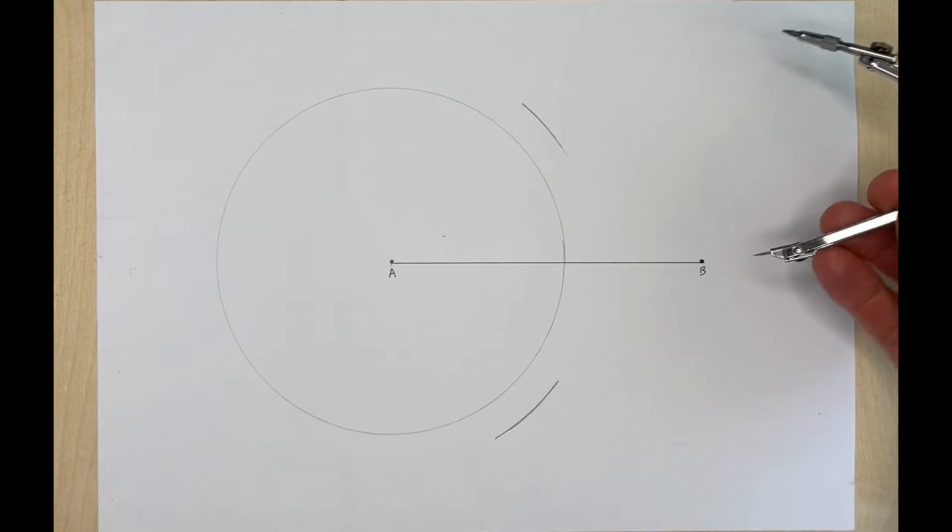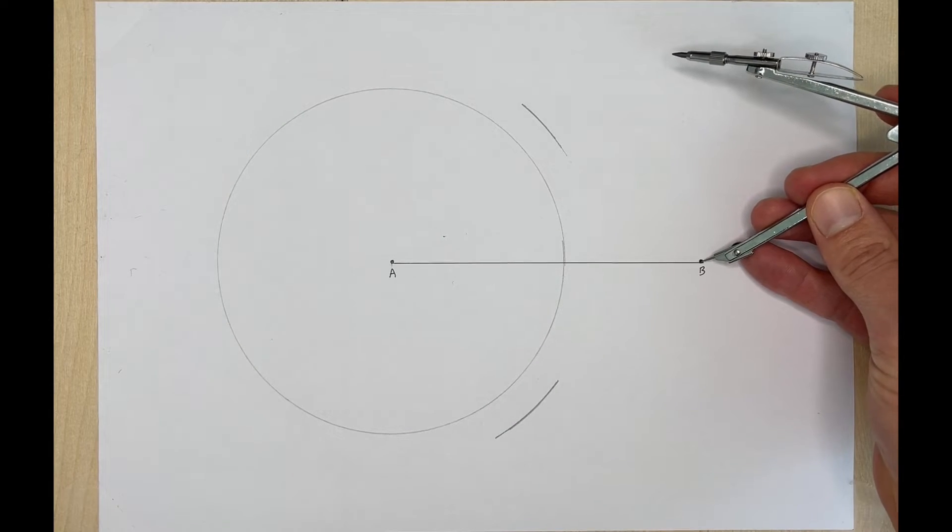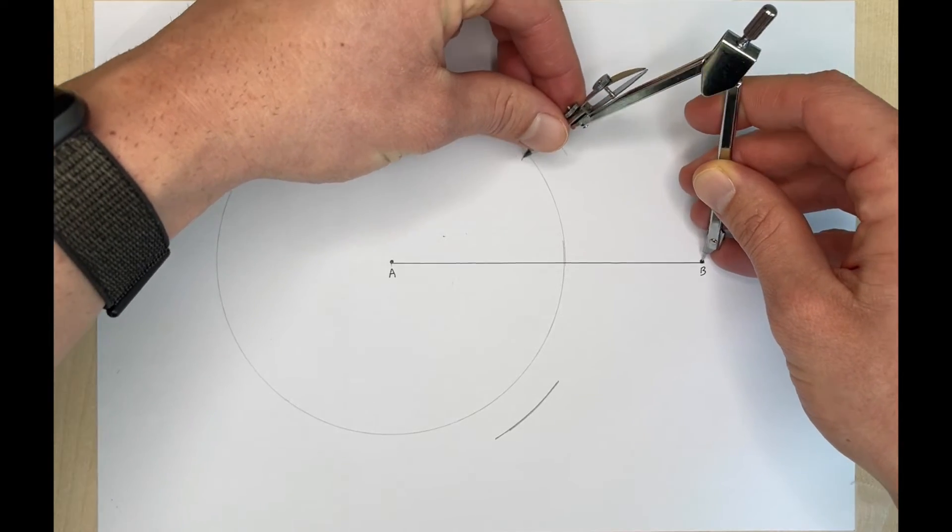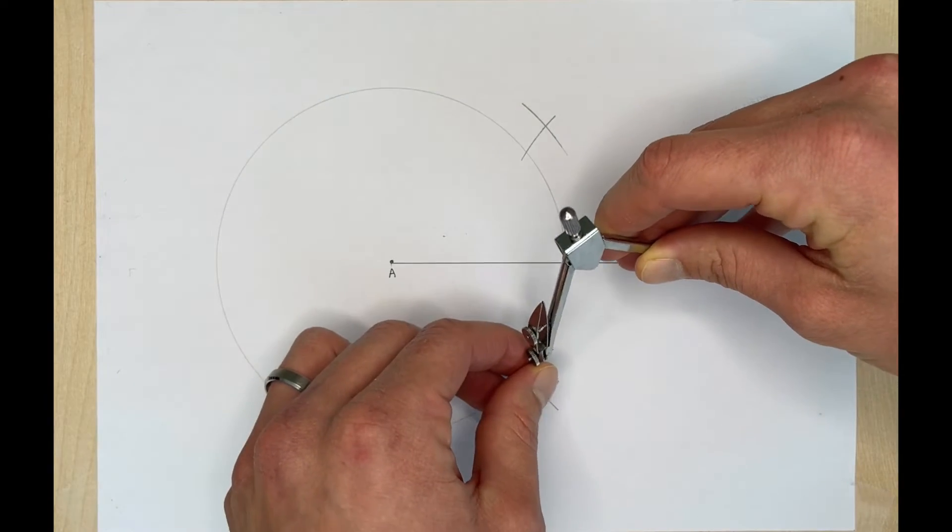Now we're going to take our compass, flip it over, put the needle on B and we're going to keep the compass open the same amount and we're going to make an arc up here that intersects our previous two arcs that we just did.